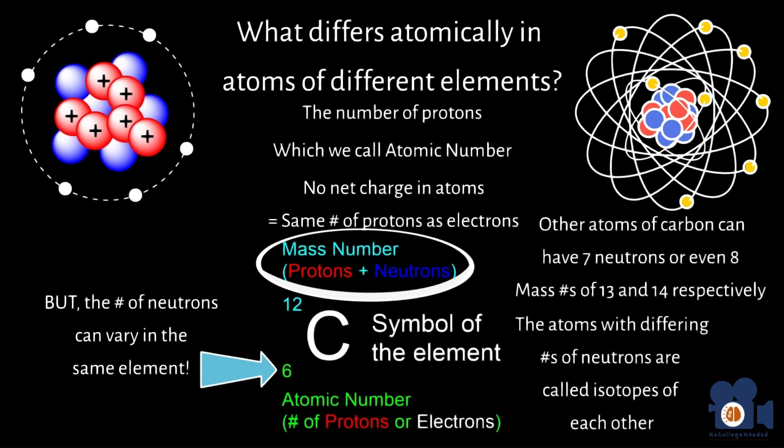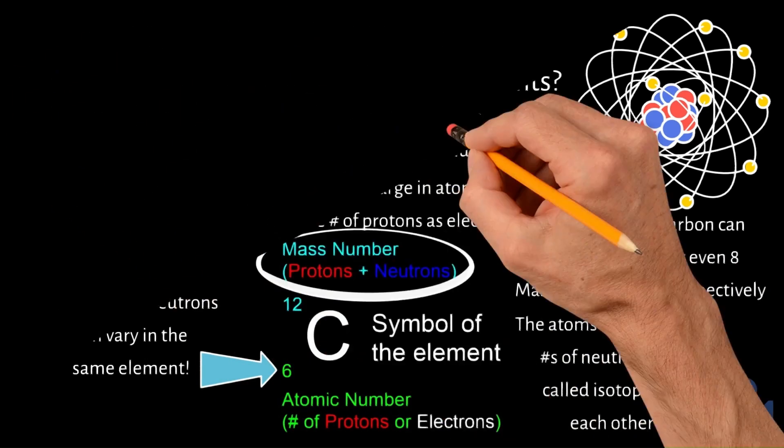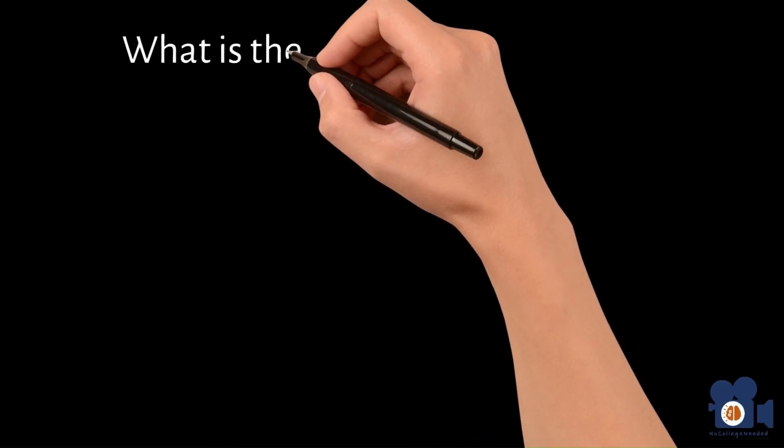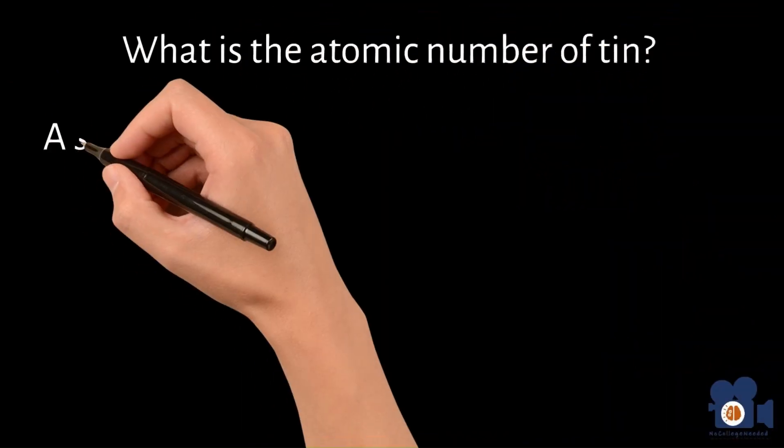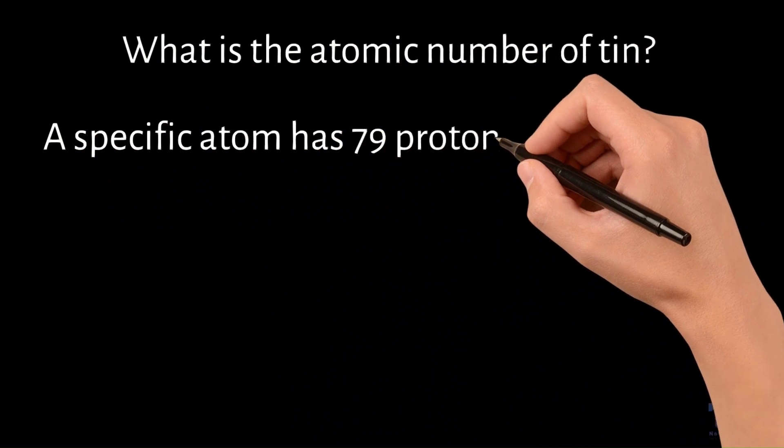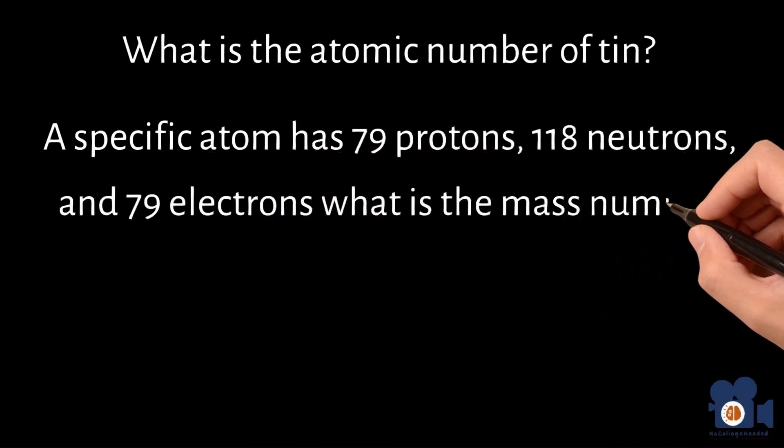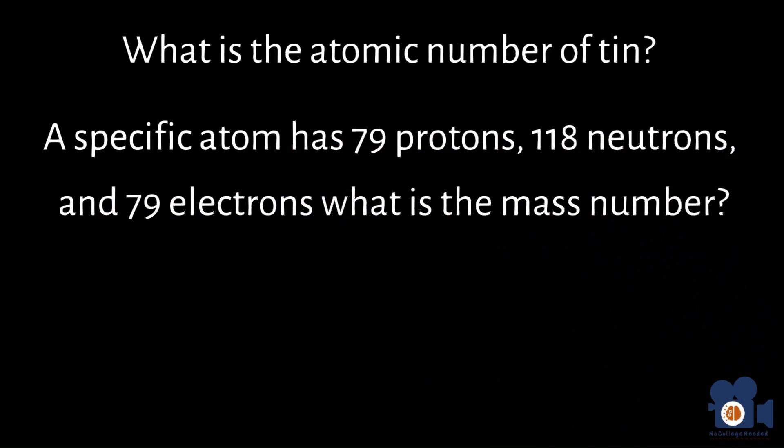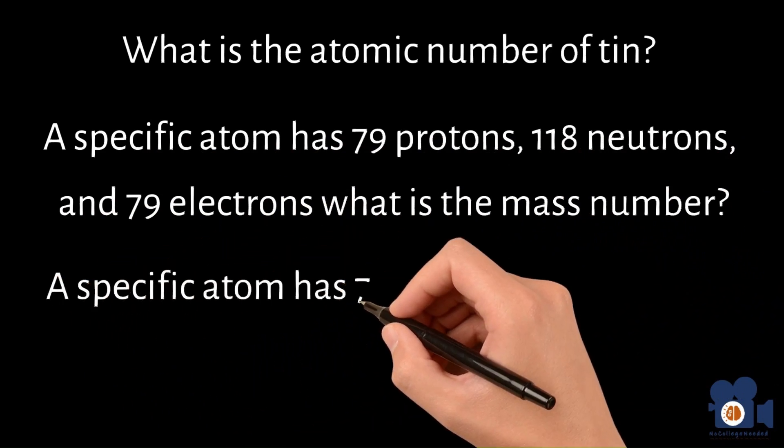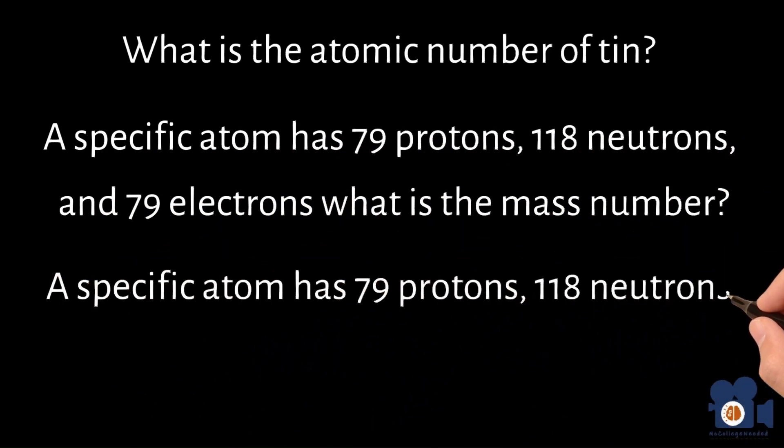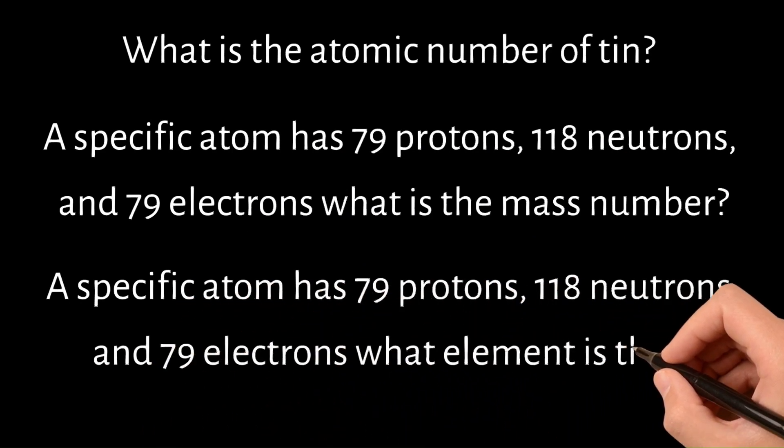Some problems to think about after going through this unit are: what is the atomic number of 10? A specific atom has 79 protons, 118 neutrons, and 79 electrons. What is the mass number? What element is this?